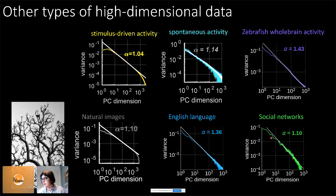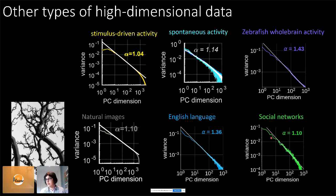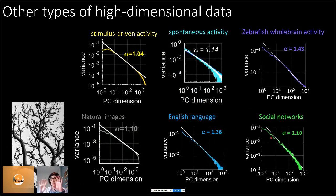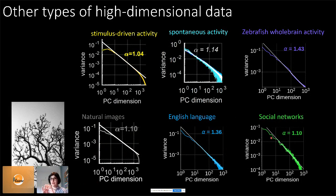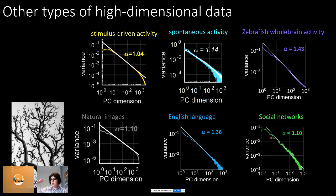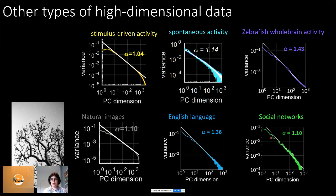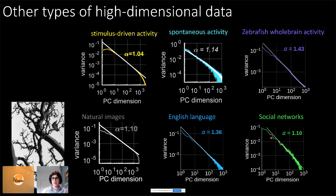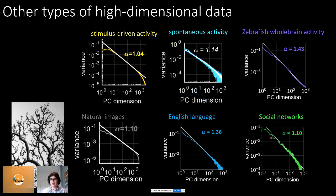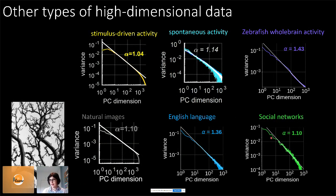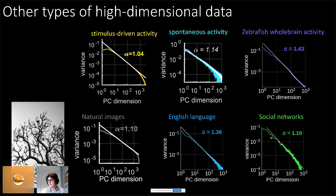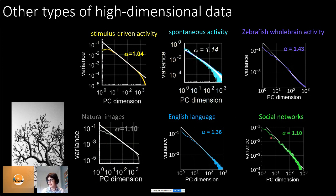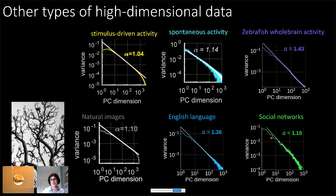There's a question: if you're recording across multiple retinotopic fields, how might this contribute to the dimensionality estimates? What we found is that if you combine two areas with different receptive fields, the power law becomes a bit flatter — you're exploring more dimensions of the neural space than you would be recording from a single retinotopic field.